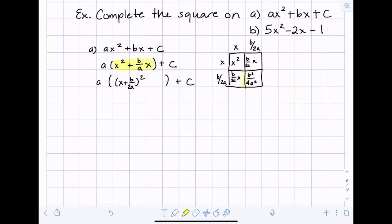When we add together our two middle boxes here. b over 2a plus b over 2a gives me 2b over 2a which is just b over a x. So check we got to our middle term. And then what was extra that was added on is this red square here. That's extra.